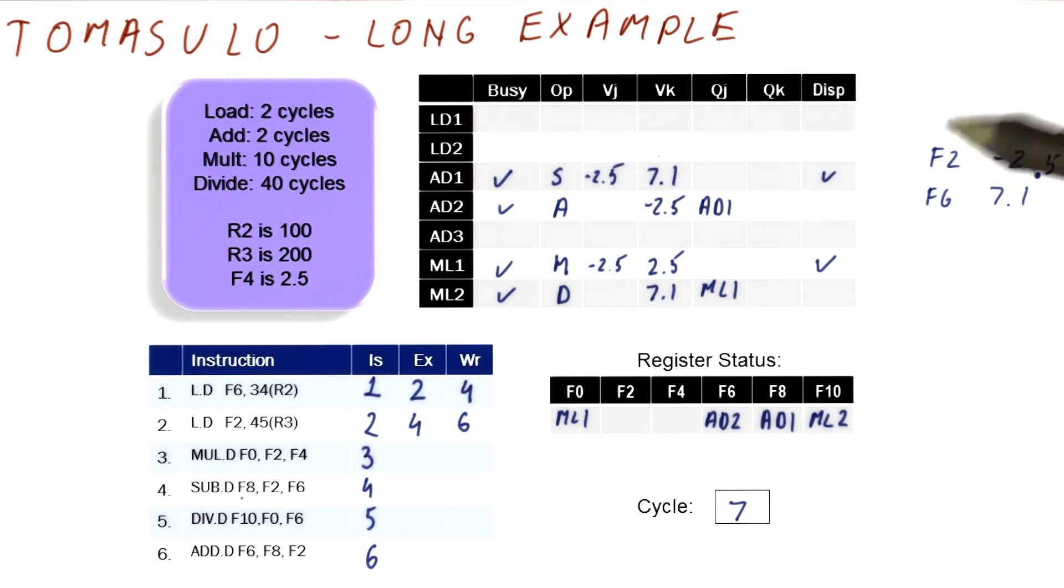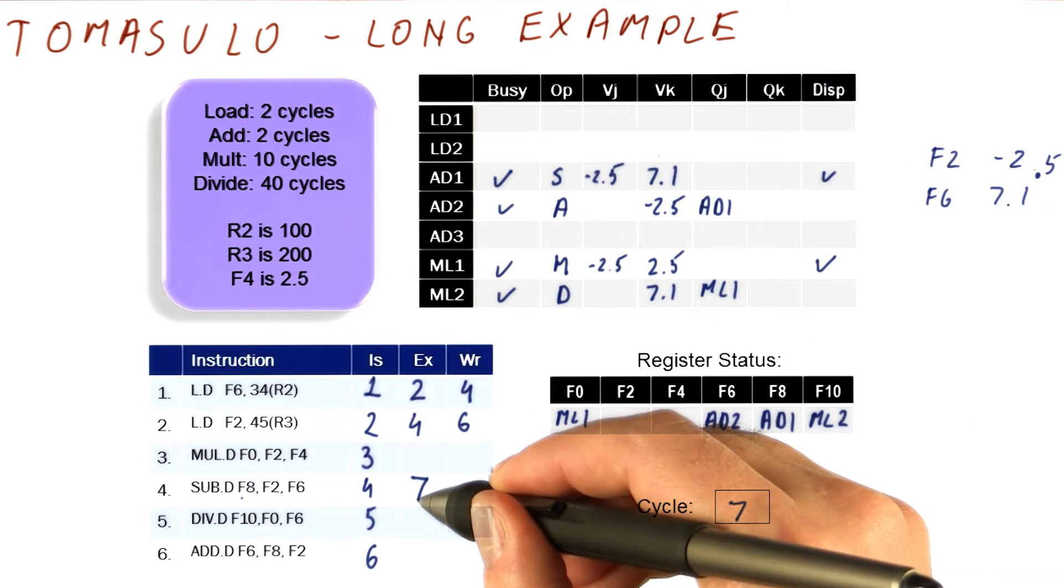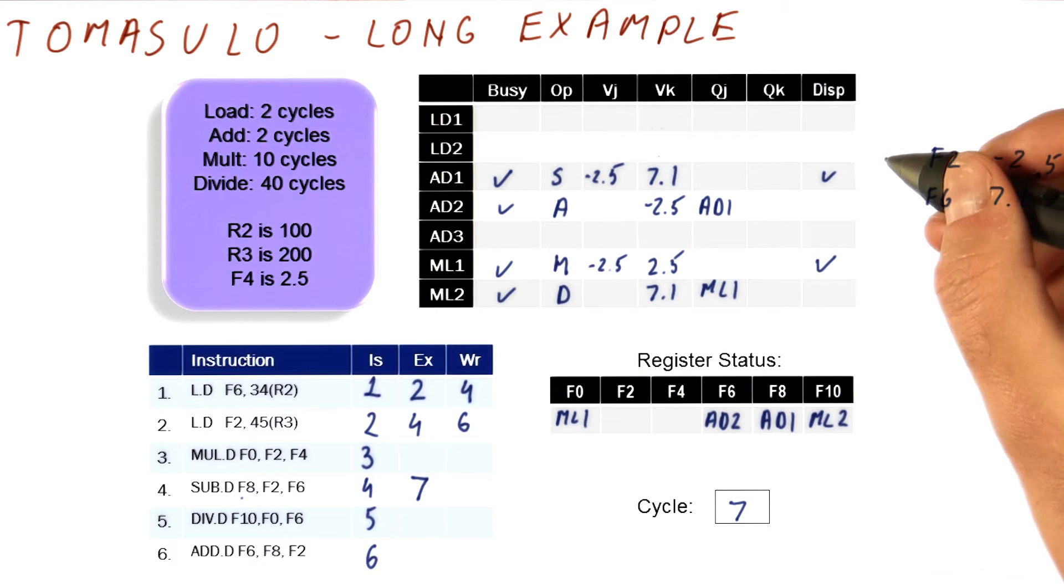We will broadcast the result, but there is nothing executing currently, so we don't broadcast anything. We will mark that the subtract here, which is this instruction, started executing in cycle seven.